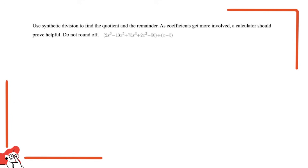The question says, use synthetic division to find the quotient and the remainder. As coefficients get more involved, a calculator should prove helpful. Do not round off. We're given the polynomial 2x^6 - 13x^5 + 75x^3 + 2x^2 - 50 divided by x - 5.